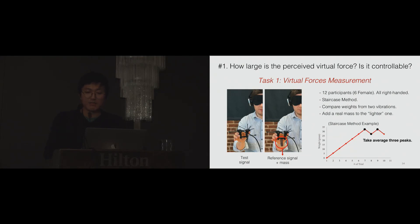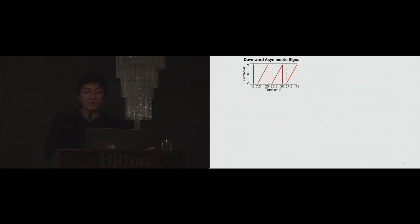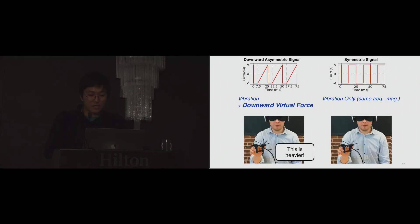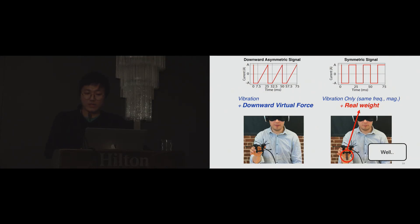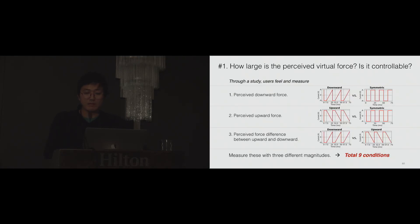Twelve people participated for the virtual force measurement. We used staircase method to calculate the perceived virtual forces. Users compared the weight from the virtual force with a real mass. For better explanation, if we give downward asymmetric signal to the voice coil actuators, users will receive vibration, but also the downward virtual force. To measure the downward virtual force, the symmetric signal on the right side gives the reference haptic feedback, which is just vibration, but same frequency and magnitude with the left signal. The participant will say the left one is heavier. Then we add a real mass to the right signal, and users keep comparing the weight until they cannot tell the difference.